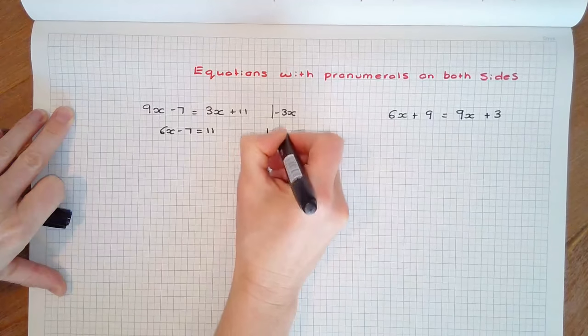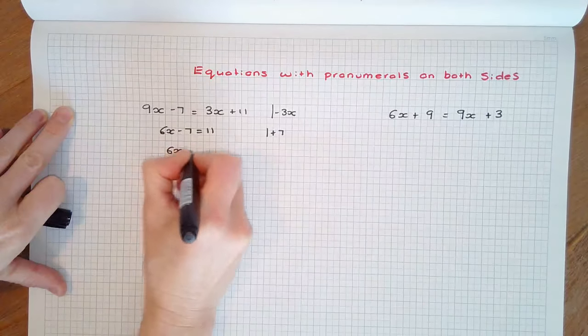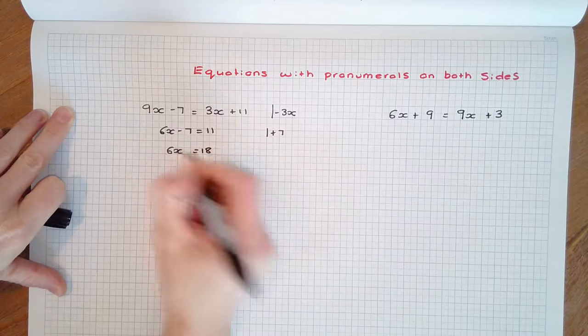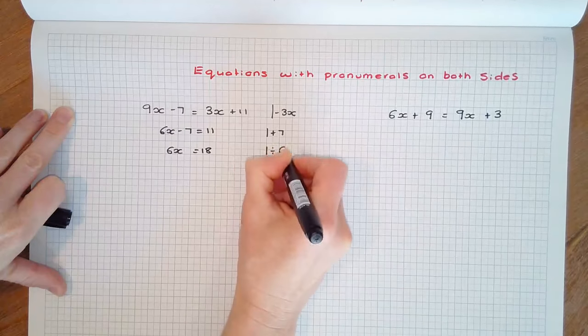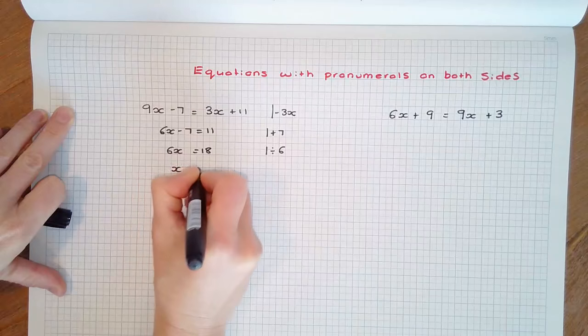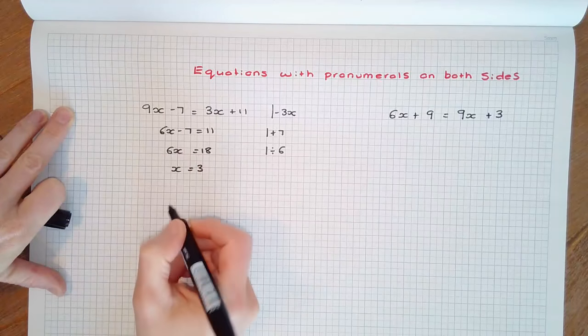The inverse of subtracting 7 is adding 7 to each side, and the inverse of multiplying by 6 is dividing by 6 each side to get our final solution of x equals 3.